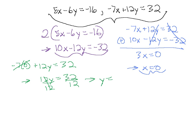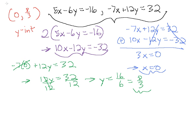We simplify 32 over 12 by pulling out a factor of 2 to get 16 over 6, and simplifying further gives us 8 over 3. So the solution point is (0, 8/3), which is also known as the y-intercept. These two lines intersect where the line crosses the y-axis, which is useful to know when graphing the system.